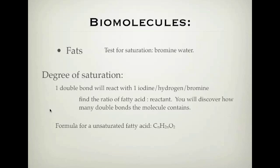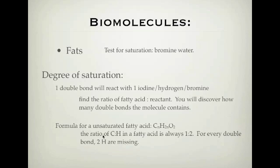The second method for finding the degree of saturation is looking at the formula for an unsaturated fatty acid. A saturated fatty acid will have a formula with n carbons and twice as many hydrogens as carbons — a 1:2 ratio. If you have a double bond, this ratio changes: for every double bond, you lose two hydrogens. So you can look at the ratio of carbons to hydrogens in your fatty acid or hydrocarbon and work out how many double bonds you have using that formula.